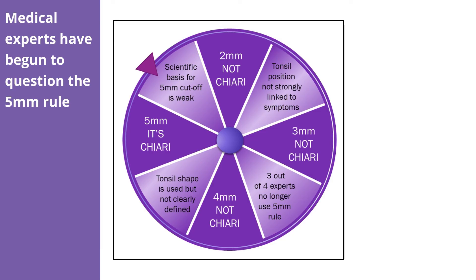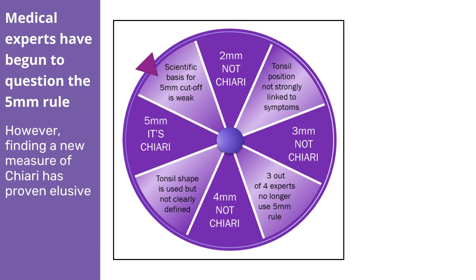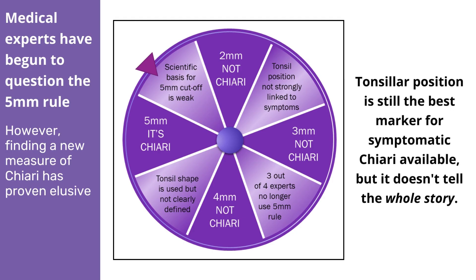Because of these issues, many medical experts have now begun to question the five millimeter rule. However, finding a new measure of Chiari has proven elusive. So although it is not perfect, tonsillar position is still the best marker for symptomatic Chiari available, but it is important to keep in mind that it is not the whole story.